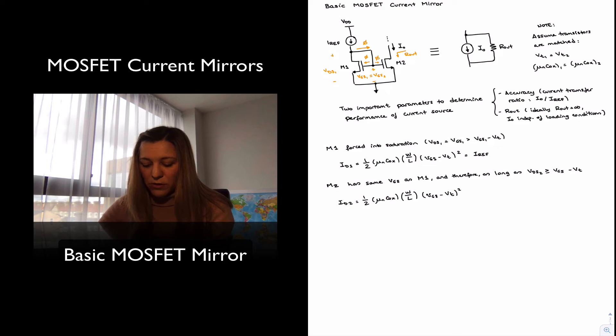Notice that the process parameters mu n C ox are the same in both cases. The aspect ratios though, with over length is something that we have control over when we're doing IC design, is the geometry of the transistor. And so I'm going to perhaps say, put a one and a two subscripts there because they don't necessarily need to be matched. And sometimes we are going to use different aspect ratios in order to scale the currents up and down in different branches of a mirror. But everything else is the same. VGS is the same. VT is the same. And the process parameters are the same.